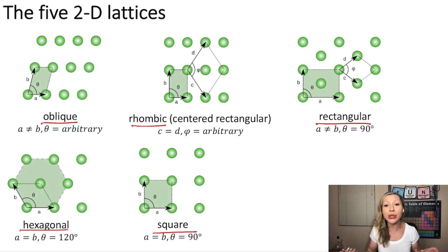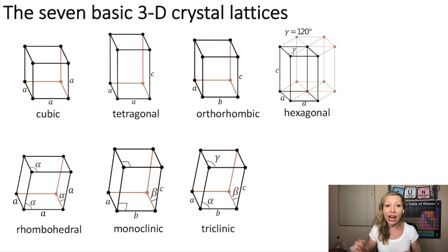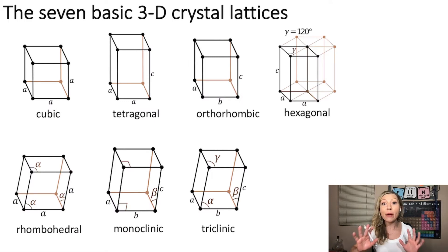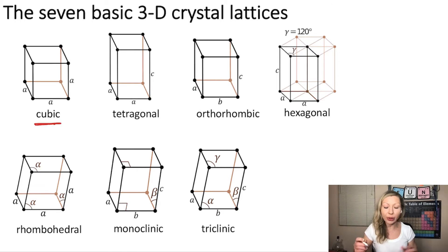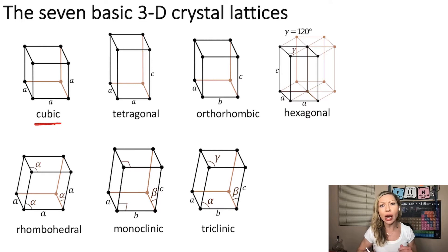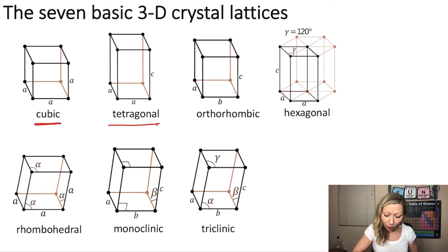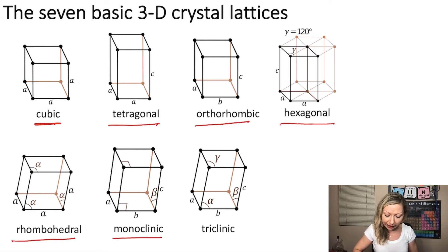What happens in three dimensions? In three dimensions, we actually have seven basic crystal lattices, and the most important one is the cubic crystal lattice, because the structures of many metals conform to one of the cubic unit cells. We also have tetragonal, orthorhombic, hexagonal, rhombohedral, monoclinic, and triclinic crystal lattices.